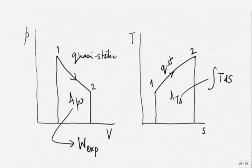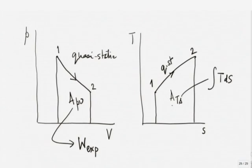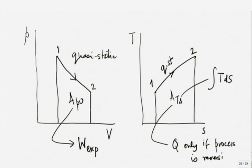T dS ≥ dQ by the second law, so Q ≤ ∫T dS. The area on the TS diagram equals Q only for a reversible process. For a quasi-static process on the PV diagram, ∫P dV is the expansion work without doubt. So remember: ∫T dS = Q only for a reversible process, whereas ∫P dV equals expansion work for any quasi-static process.